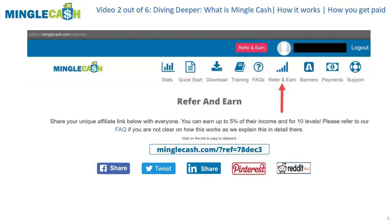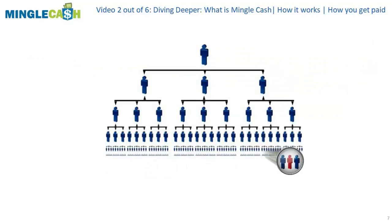Here is where the real money comes into play. Not only are you paid on the people you refer, but you are also paid on the ten levels below you. For example: you refer your best friend Andrew — user one — and user one refers Bob — user two — and so on down through user ten. You can make up to five percent on all of these Mingle Cash users, even though you personally only referred the first one.